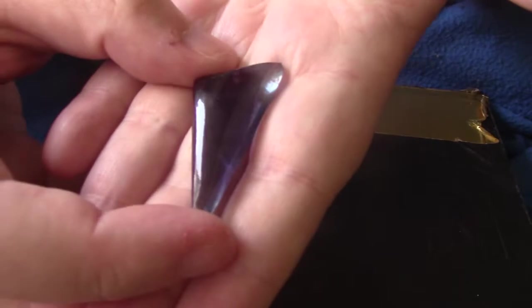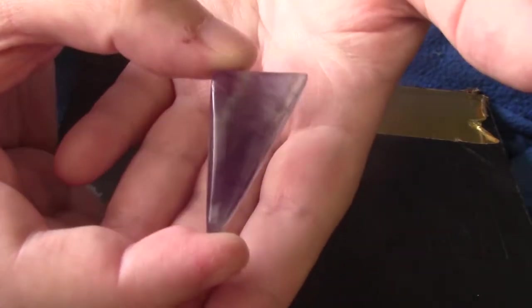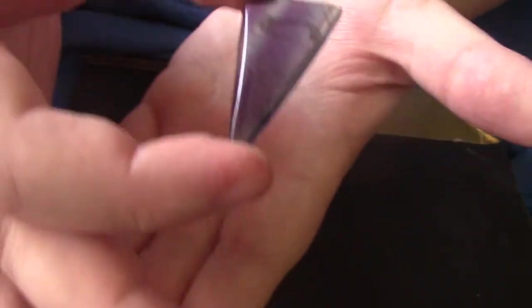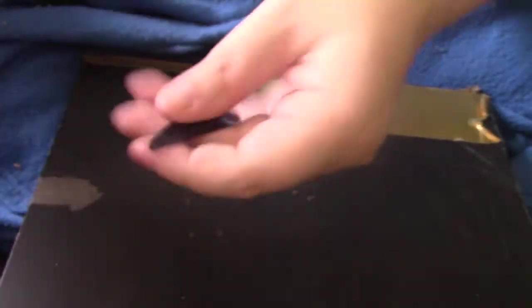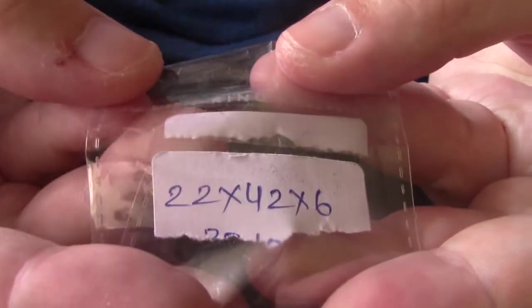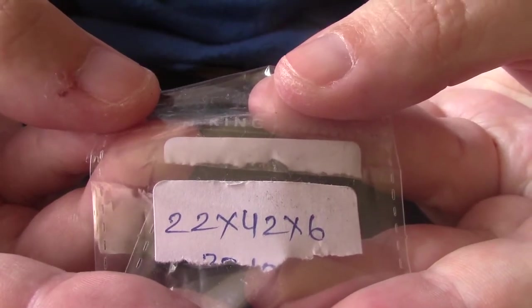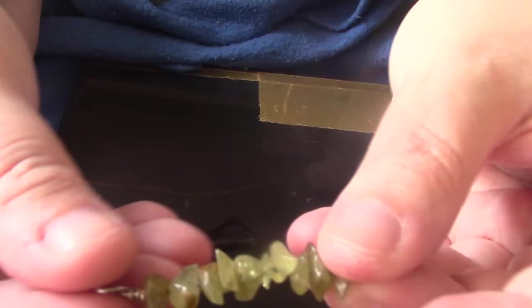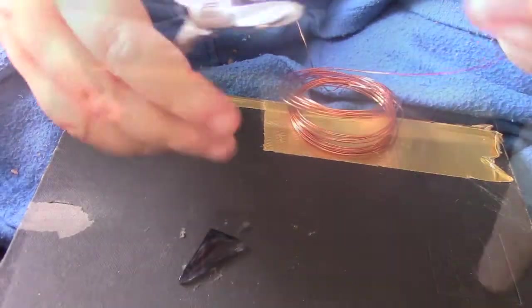My stone is a really cool right angle triangle piece of fluorite. So it's got that really nice banding in it. It's 22 by 42 by 6. Of course, your stone might be an entirely different thing. And there's my green garnet chips that I'm going to be using later.